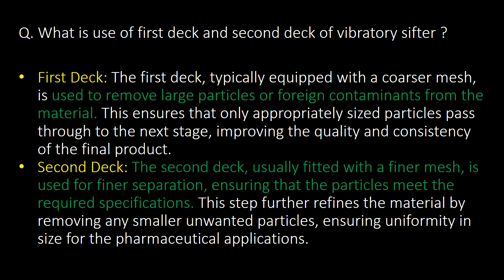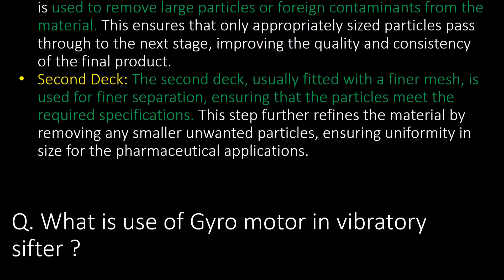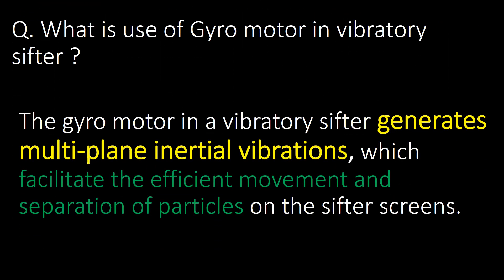What is the use of the first deck and second deck of a vibratory shifter? The first deck, typically equipped with a coarser mesh, is used to remove large particles or foreign contaminants from the material. The second deck, usually fitted with a finer mesh, is used for finer separation, ensuring that the particles meet the required specification.